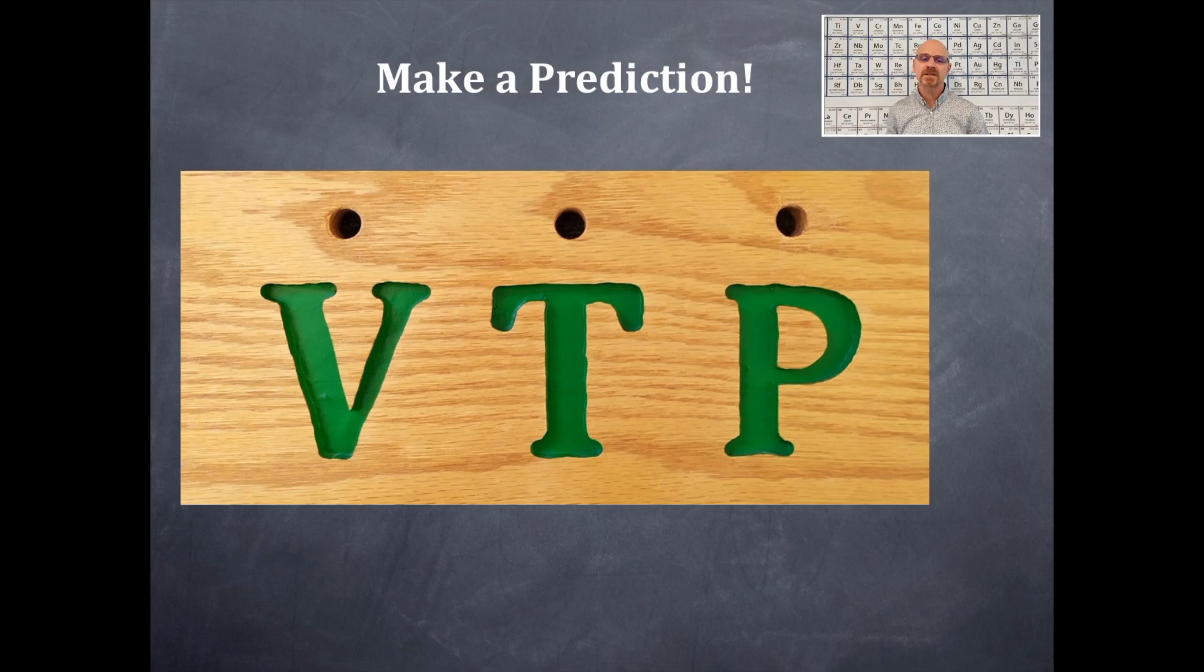So what I want you to do is I have this piece of wood that I've made in my classroom, and you are going to make a prediction. V is standing for volume, T is standing for temperature, and P is standing for pressure. And there's holes that I've drilled out on this piece of wood right here above each of the variables: volume, temperature, and pressure. And it needs to be in this order of volume, temperature, and pressure. At least the temperature needs to be centrally located.